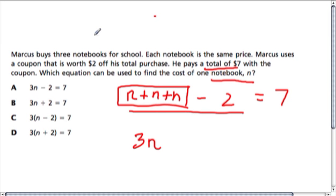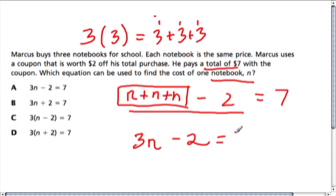If the cost of each notebook was $3, which it is, that would be 3 times 3, which equals 9, or 3 plus 3 plus 3. So we have three threes, so we multiply 3 by 3. Same thing here. We have three N's. So we have 3 times N minus 2. That's the coupon. All that cost gives us $7. So our equation right here is A.